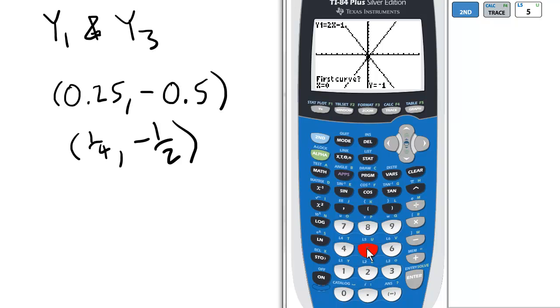The first prompt is for the first curve. Notice in the upper left-hand corner of the viewing screen, the Y1 function is displayed. Press Enter to give your assent.